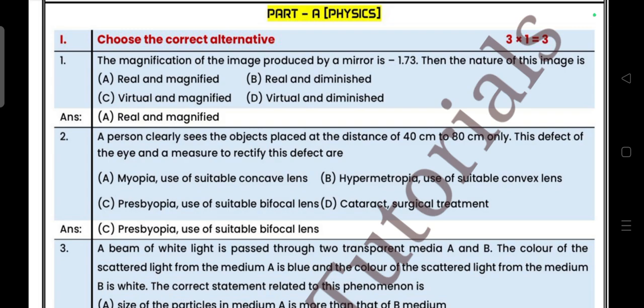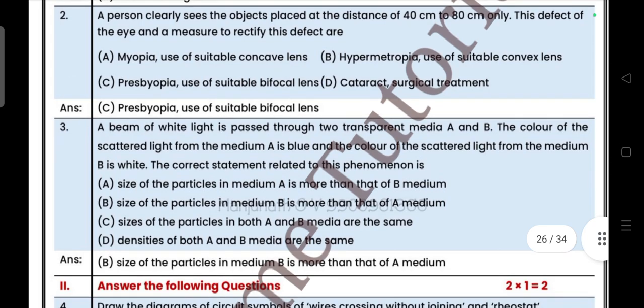The answer is presbyopia, use of suitable bifocal lens. Question 3: A beam of white light is passed through two transparent media A and B. The color of the scattered light from medium A is blue and from medium B is white. What is the correct statement related to this phenomena? Answer is B.